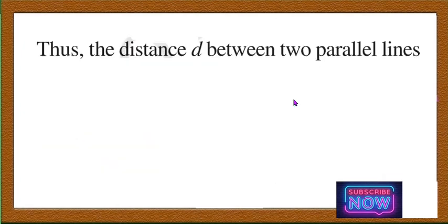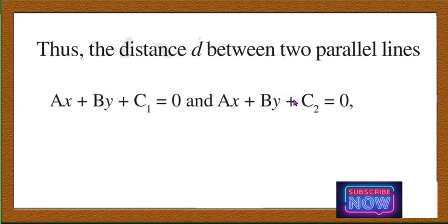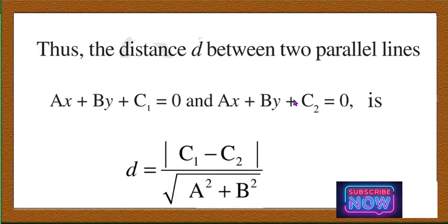Thus, the distance d between two parallel lines ax + by + c1 = 0 and ax + by + c2 = 0 is given by d = |c1 − c2| / √(a² + b²). With this I will conclude this video. In the next video I will solve the problems from the exercise. Thank you.